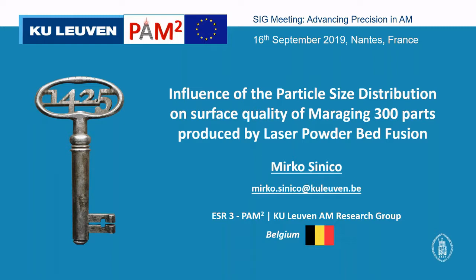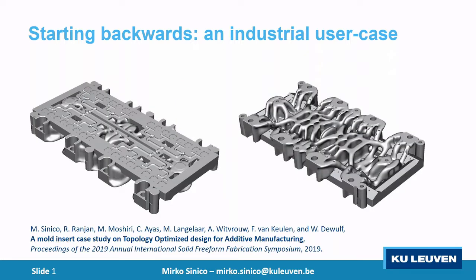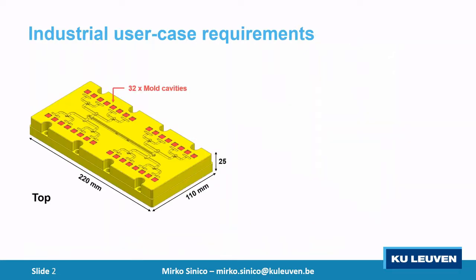Thank you for the introduction. I named the first slide 'Starting Backwards: Industrial Use Case' because I wanted to show the possible applications of the research we are doing, and also an industrial case study. This is a case study of the Palm Square project, presented also at SFF 2019 where we did some topology optimization.